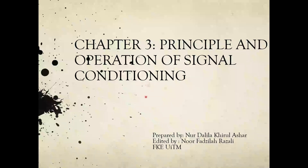Assalamu'alaikum warahmatullahi wabarakatuh. Today we are going to continue industrial instrumentation, chapter three. From chapter one and two, you should have already covered the first components of a control system — the input or sensors. The signal from the sensor will go to the controller, but the circuit needs to process that raw data before it can reach the controller.